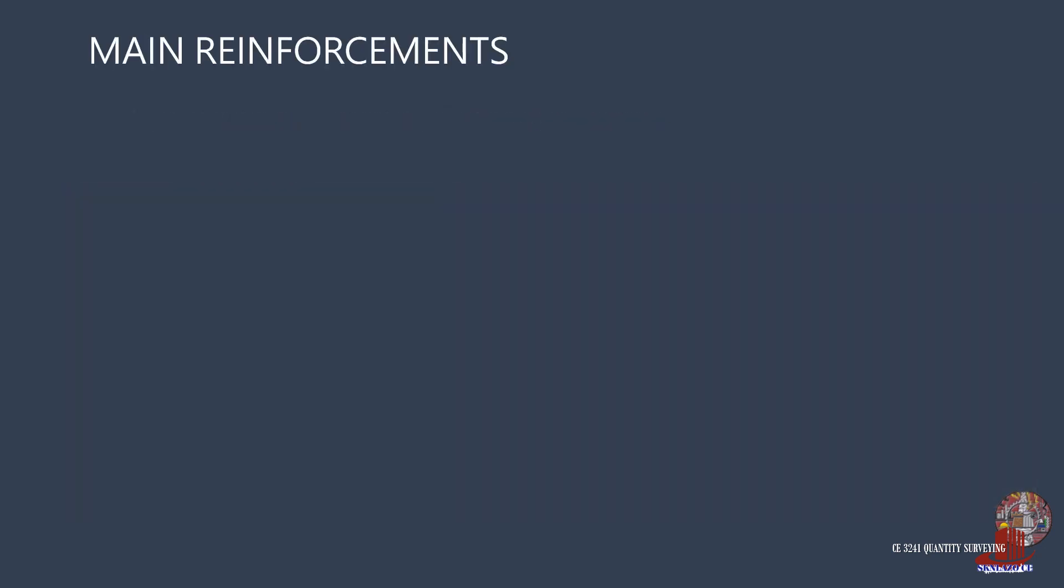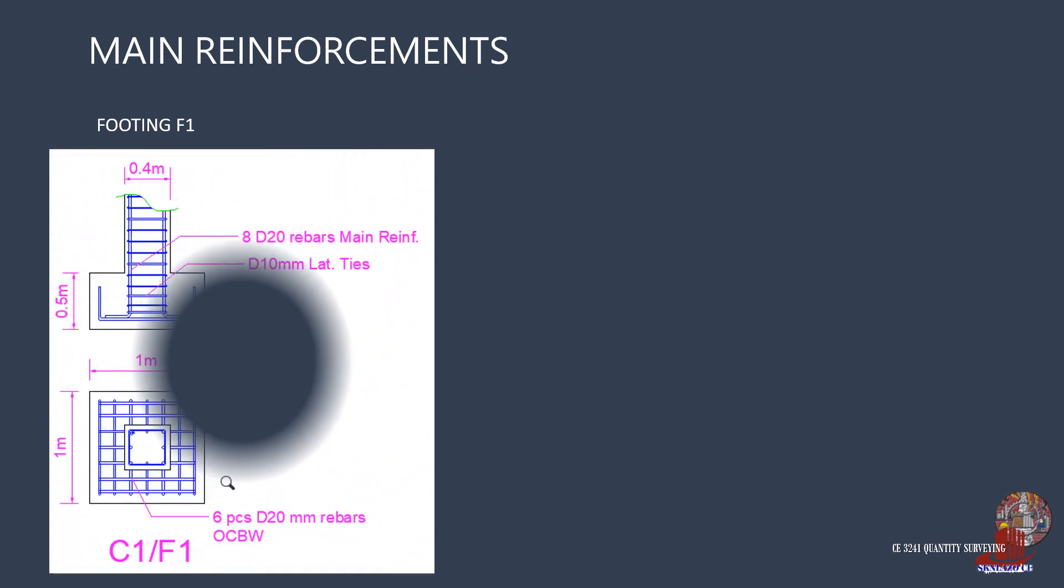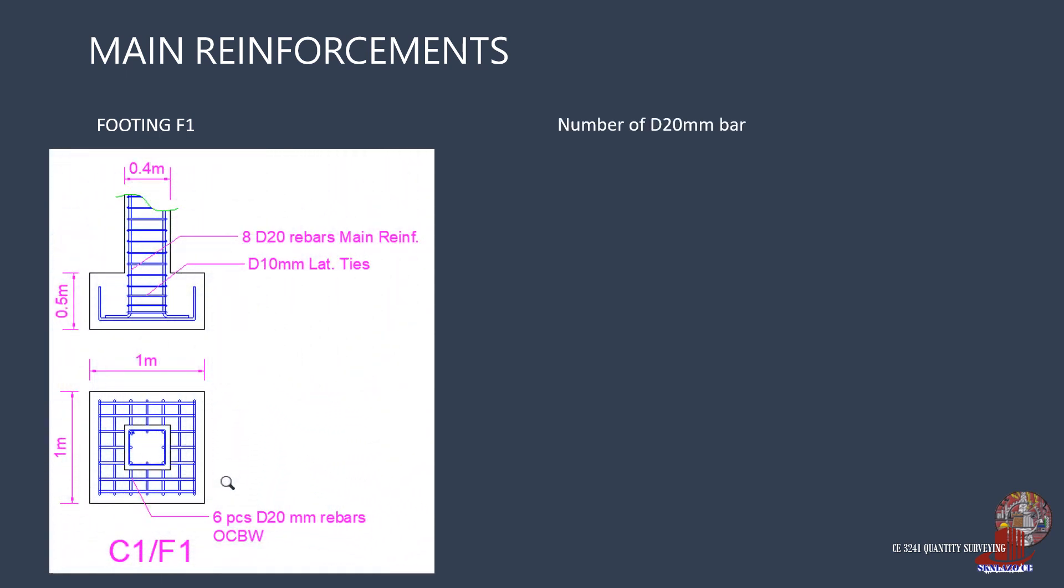Starting with the main reinforcements, compute for the number of bars in each footing. For footing F1, there are 6 diameter 20mm bars placed OCBW, that is, on centers both ways. This means that there are 6 longitudinal as well as transverse bars, accounting to 12 D20 reinforcing steel bars in each F1 footing.